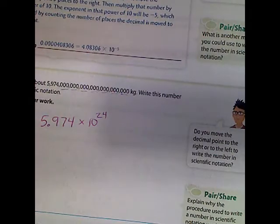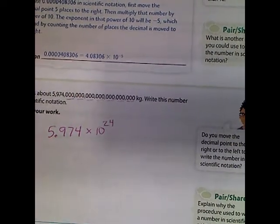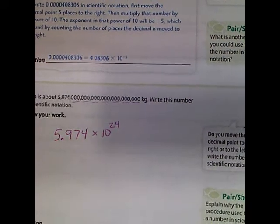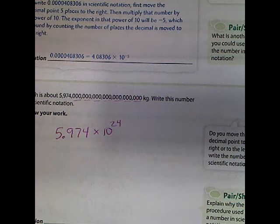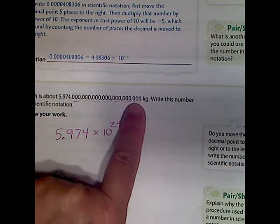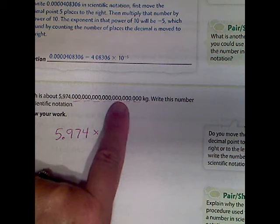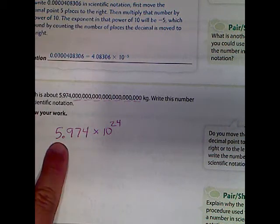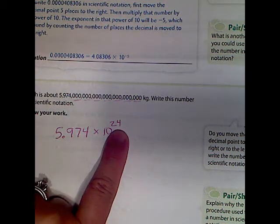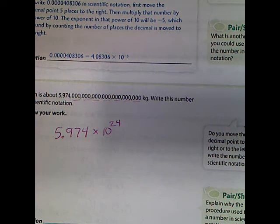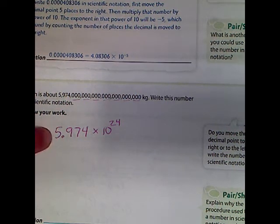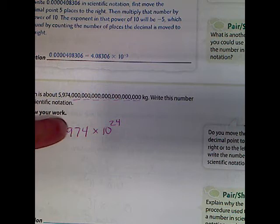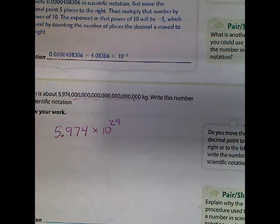We're going over pages 34 to 37 in your guided practice instruction book. Number 19 — this is a huge number. You had to count all the zeros and use your commas: 3, 6, 9, 12 — that's 24 zeros — so it's 5.974 times 10 to the 24th. In scientific notation, you must have a number right here that is not zero; it has to be one through nine, then the decimal, then your other numbers.